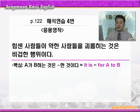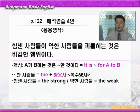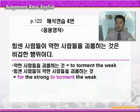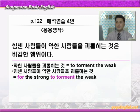이때 it은 가주어, to부정사인 to가 진주어가 되고, for A는 to의 의미상의 주어가 되죠. 먼저 '힘센 사람들' — the plus 형용사 이런 형태를 써서 복수명사를 만들면 되니까 힘센 사람들은 'the strong' 이렇게 하면 되겠습니다. 약한 사람들은 'the weak' 이렇게 하면 되겠죠. 괴롭히다는 본문에서 나온 동사 torment를 써서 'to torment' 이렇게 하면 되겠습니다. 따라서 힘센 사람들이 약한 사람들을 괴롭히는 것 — 'for the strong to torment the weak.'